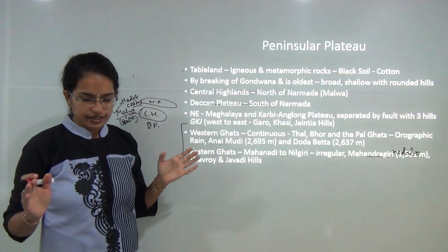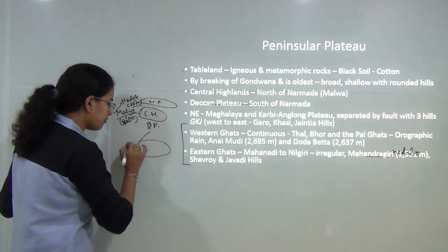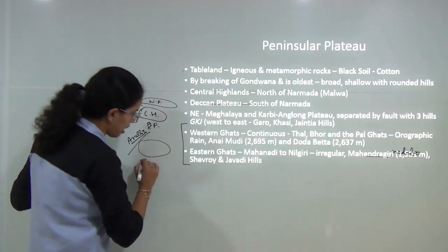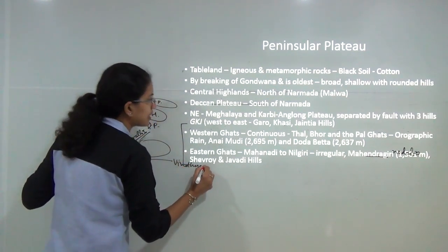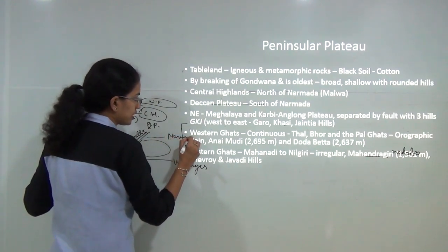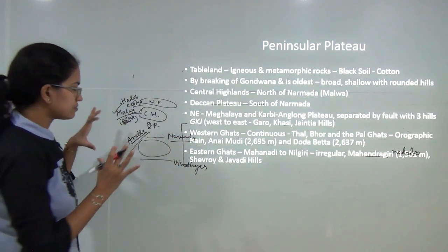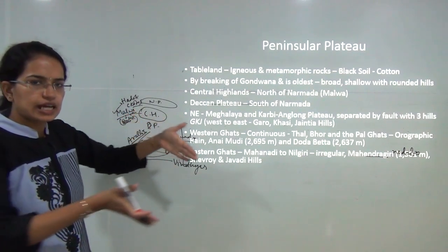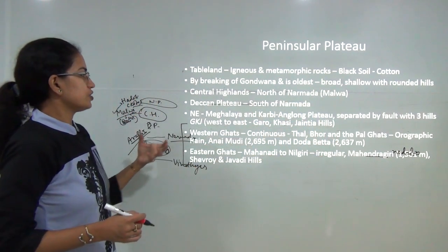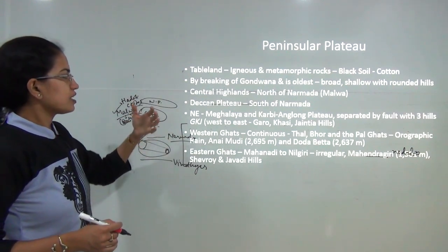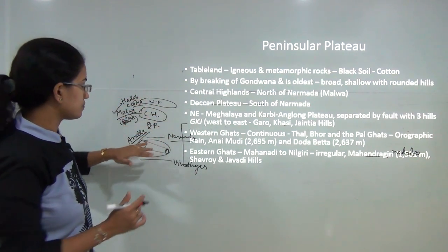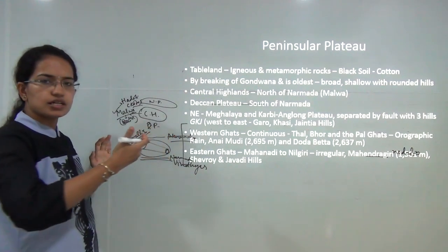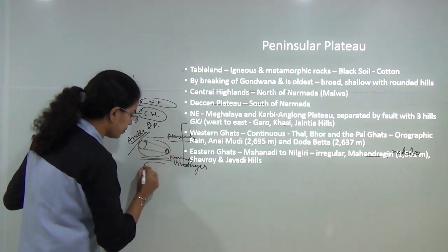The central highlands are bound on the northwestern side by the Aravalli mountains, towards the south by the Vindhyas, and to the north the Narmada river flows. This region is much wider on the west and becomes narrower towards the east. South of the Narmada is the Deccan plateau and north of the Narmada is the central highlands.